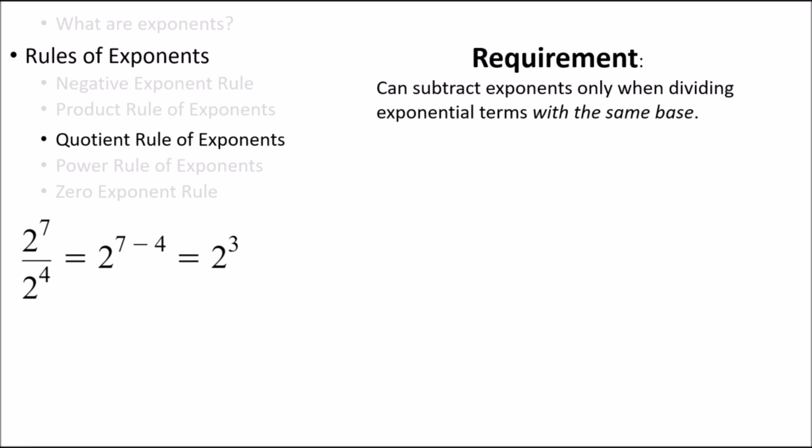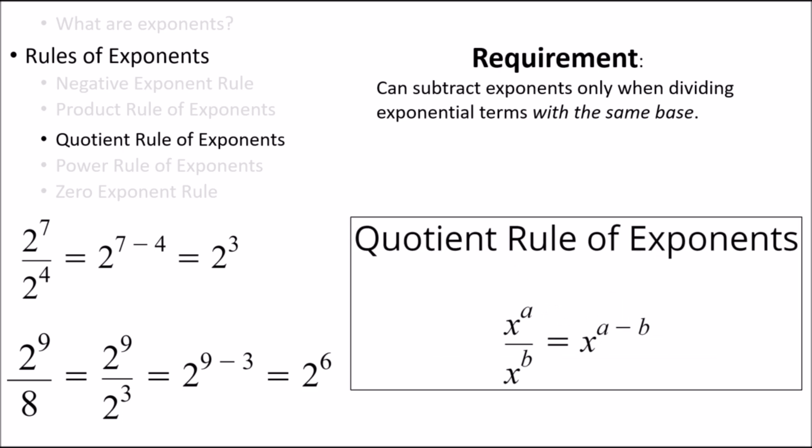Let's try another example. Can we use the quotient rule of exponents here? The answer is yes. Since 8 is equal to 2 to the 3, we can rewrite the denominator as 2 to the 3. Then we can apply the quotient rule and subtract the bottom exponent from the top exponent, giving us 2 to the 6. As long as the exponential terms have the same base, we can subtract the exponent in the denominator from the exponent in the numerator.